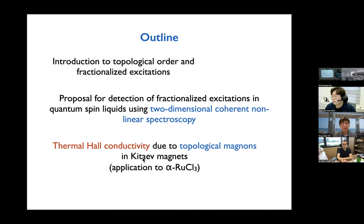The next topic is about thermal Hall conductivity. This is a very controversial issue. There have been some very interesting experiments going on in a material called alpha-RuCl3. We believe that the dominant contribution to thermal conductivity seen in the experiment may be due to topological magnons.